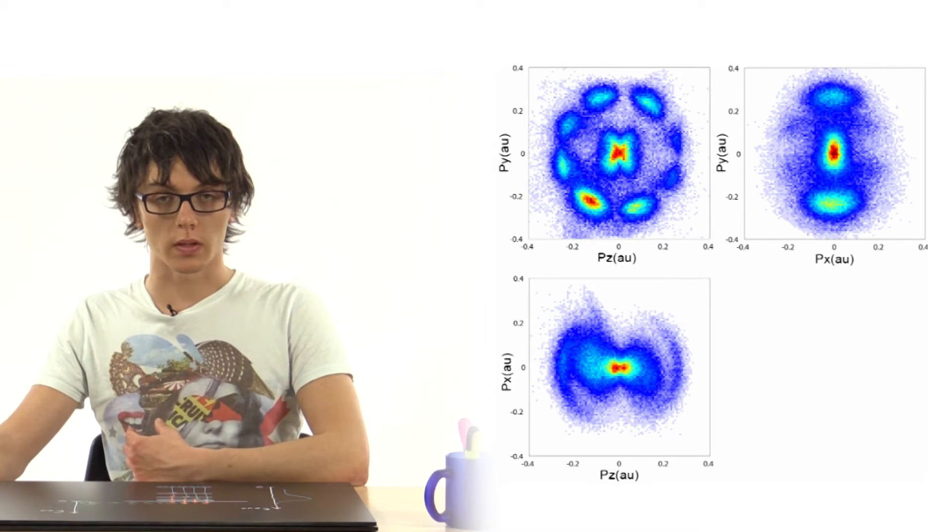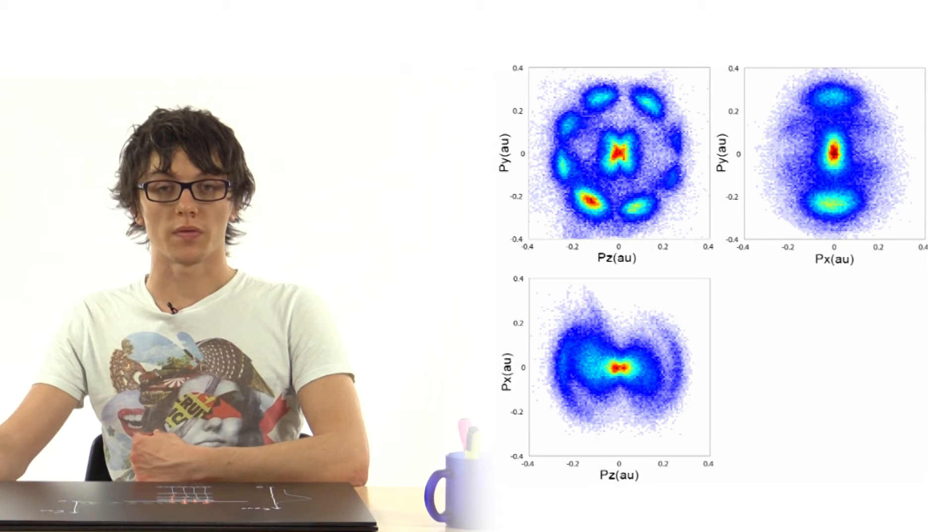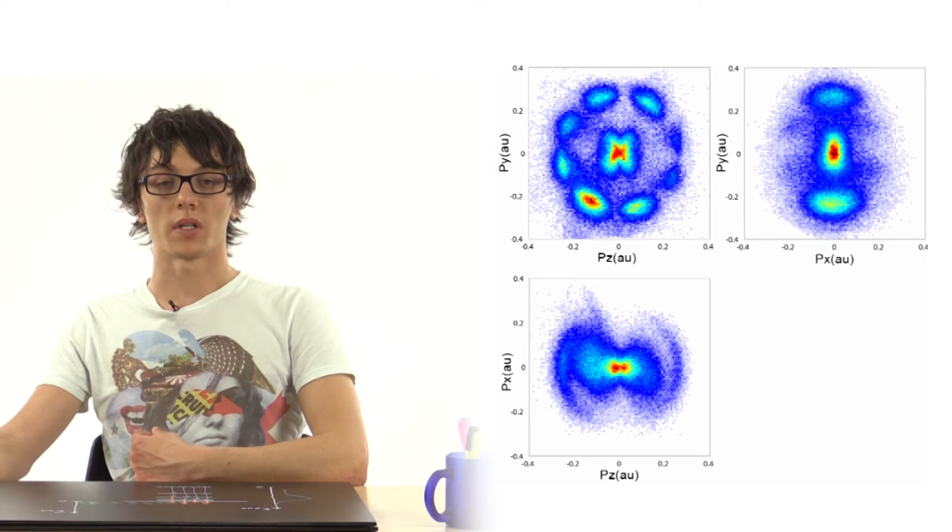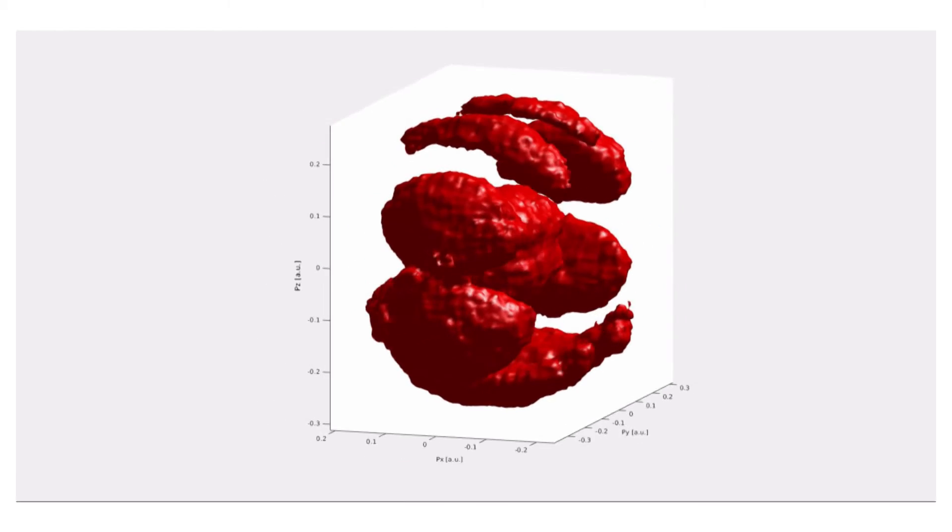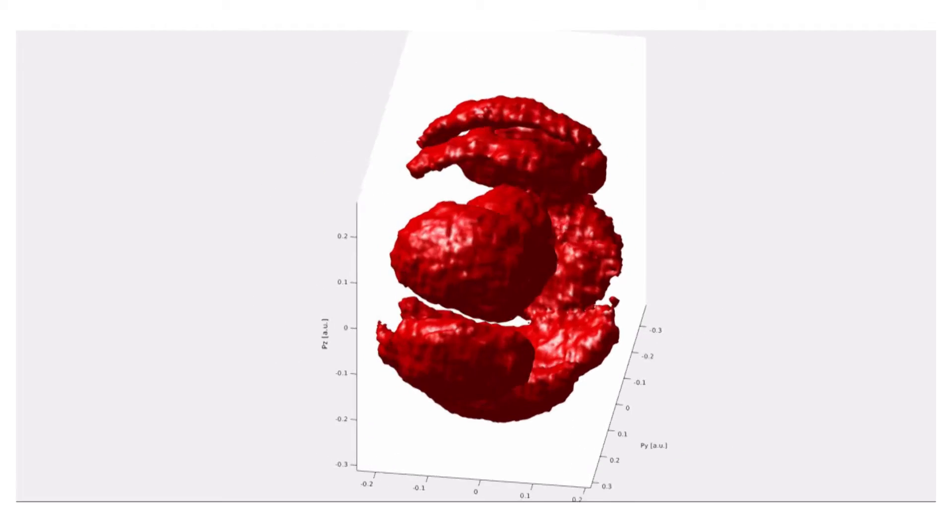By collecting the electron momentum particle by particle, we can fully characterize the distribution. For instance, we can project it on different planes, or even visualize the square modulus of the continuum wave function in the full three-dimensional momentum space. The combination of attosecond pulses with the reaction microscope clearly has the potential of providing a completely new insight into ultrafast processes in atoms and small molecules.